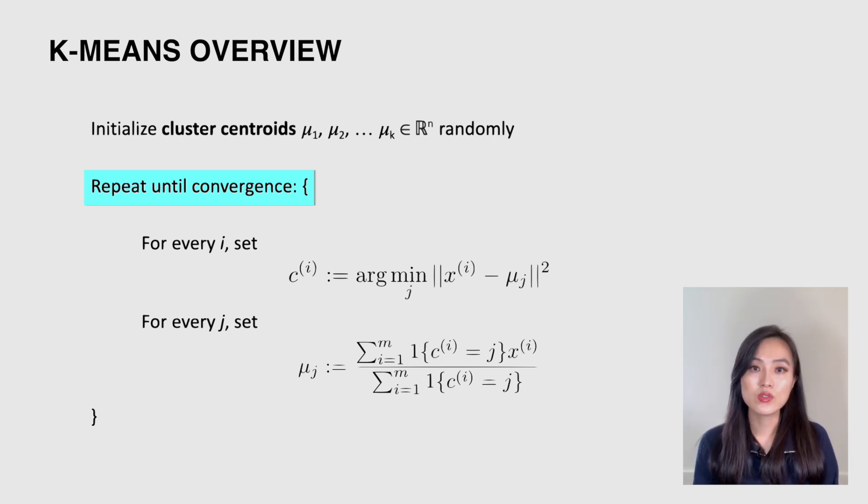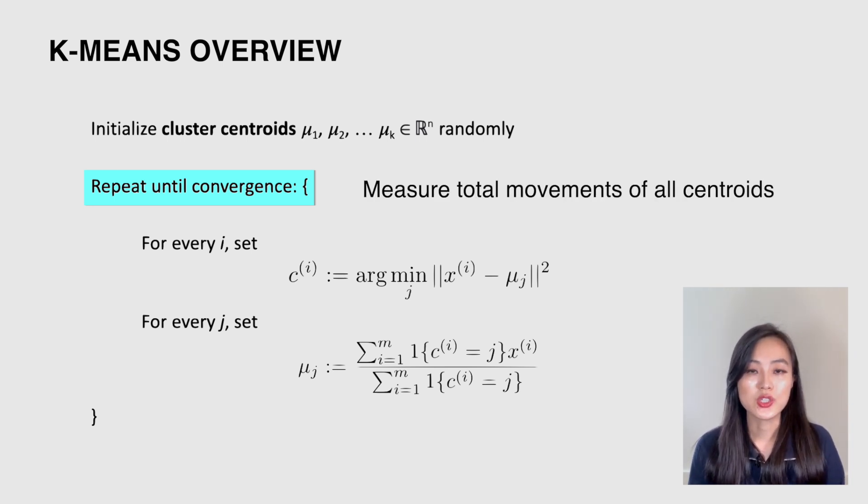We will repeat step 2 and 3 until the cluster centroids and label assignment stabilize. We consider it reaches a convergence, so we need to define a criteria of convergence so that we stop repeating step 2 and 3. Typically, we measure the total movements of all centroids after the update in step 3. If it's smaller than a certain threshold, we exit the loop. We will talk about it in detail in the implementation later.